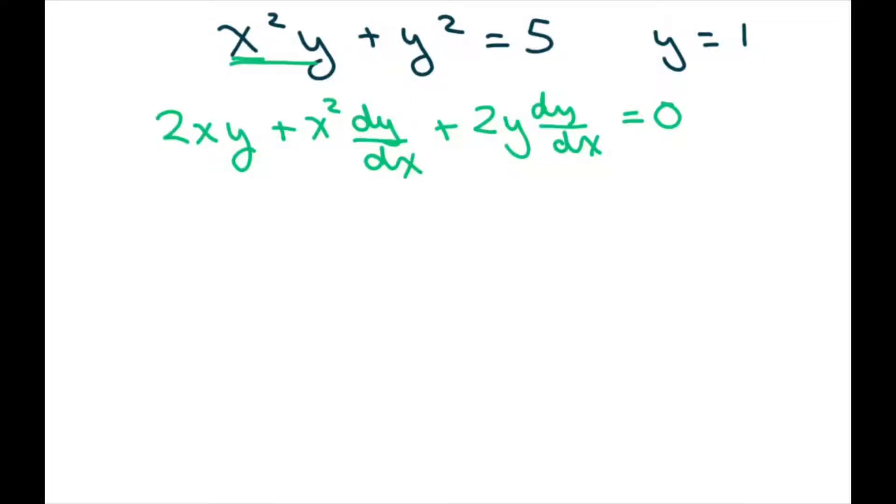Now what we're going to do is plug in 1 into the original equation to find its corresponding x values. So you plug in 1, you're going to get x² + 1 = 5. So x² = 4, therefore x equals plus or minus 2.